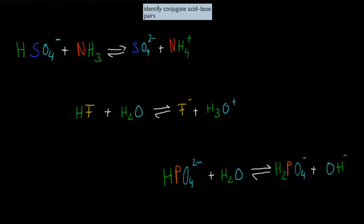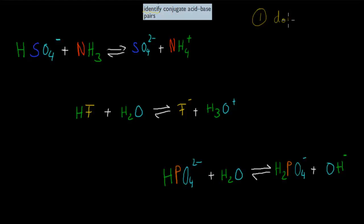This is a relatively straightforward video. What we have to do — the document itself says identify conjugate acid-base pairs. So in this case, we need to be able to look at a reaction or a formula and find out which one is the base, which one was the acid, and which ones are the conjugate acids and bases. So first thing we have to do is find out which one donates a hydrogen and which one accepts a hydrogen.